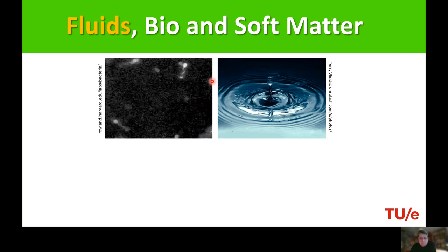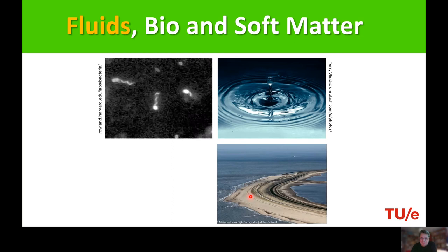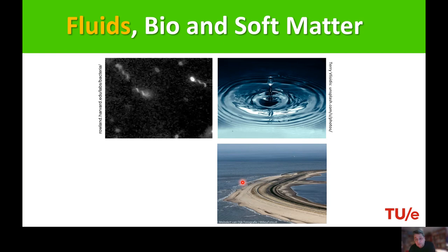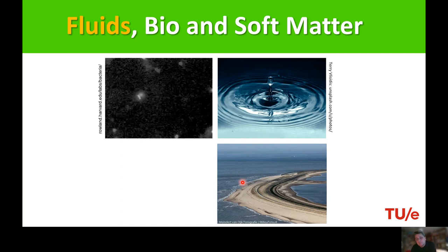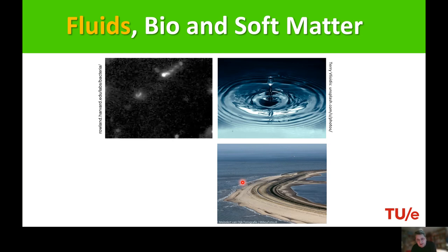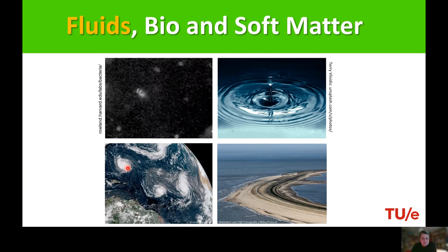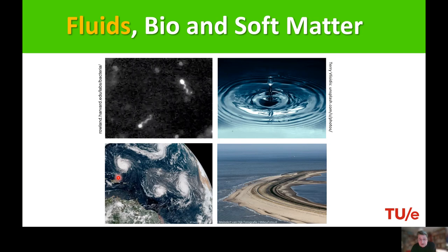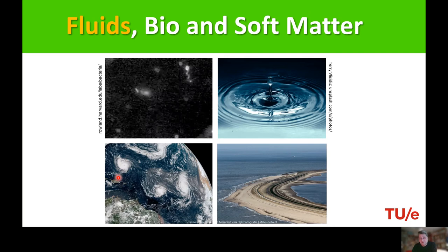Fluid flow is important not only at the micro scale but at much larger scales like kilometers. This shows reclaimed land close to the port of Rotterdam — sand that has been deposited, with water from the sea visible in the background. The interaction of water and sand is very important to the development of huge industrial-scale reclaimed land projects. You can even go much larger scale — this is a satellite image of the Earth where you can see white swirls which are tornadoes — fluid flow on the scale of thousands of kilometers, where the fluid is air.